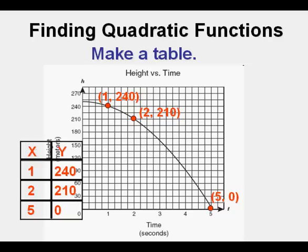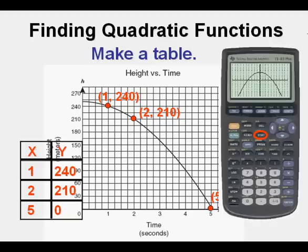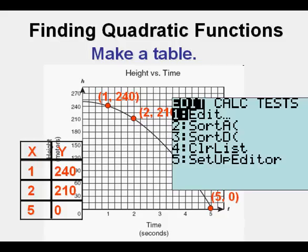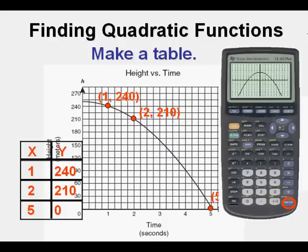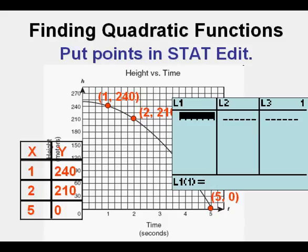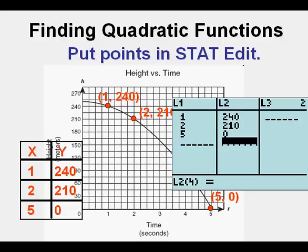Then we're going to go to our graphing calculator and press the stat key. And from the stat menu, we have edit and we press enter. And then we get this view. And here we're going to enter our three points. Again, the x values under L1, the y values under L2.